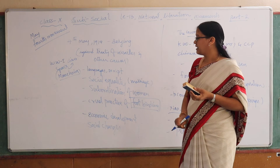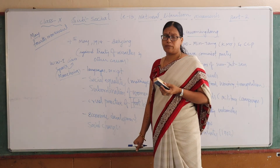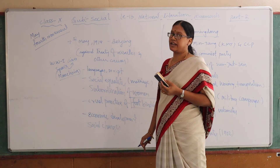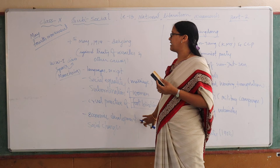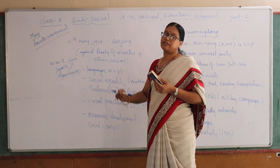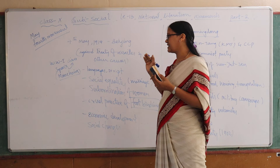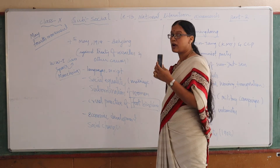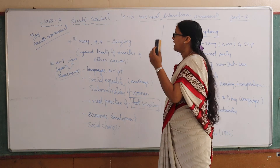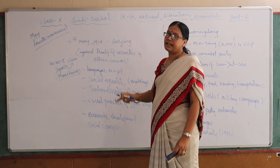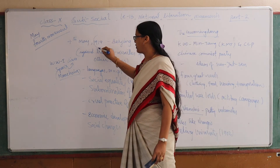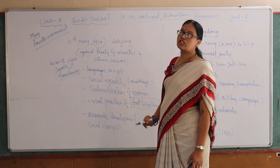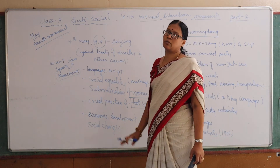They did not want to continue this practice. There was also no proper economic development in China, and people wanted many social changes. With all these demands, many demonstrators gathered in Beijing on May 4th, 1919. We know 1919 is important, as the Treaty of Versailles was also signed that year. This movement is called the May 4th Movement in China, during the first regime of the Chinese Republic.